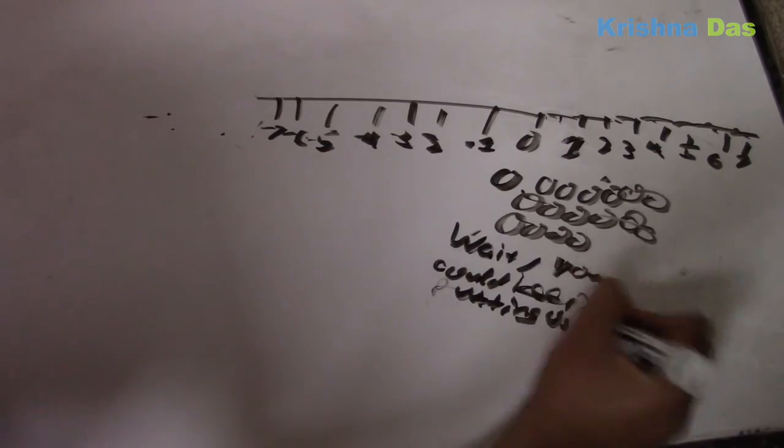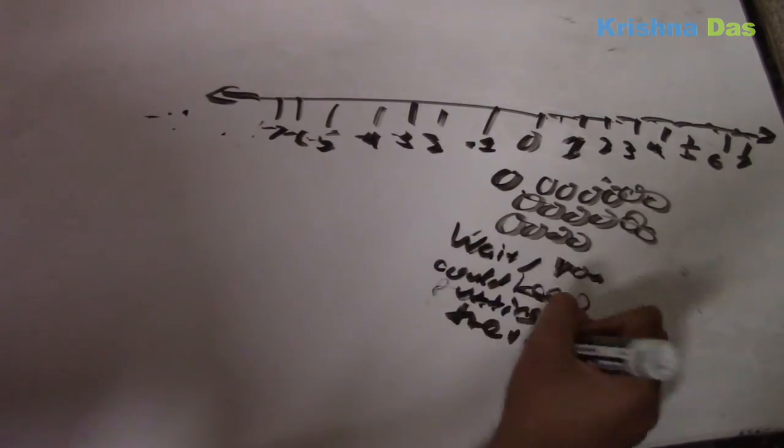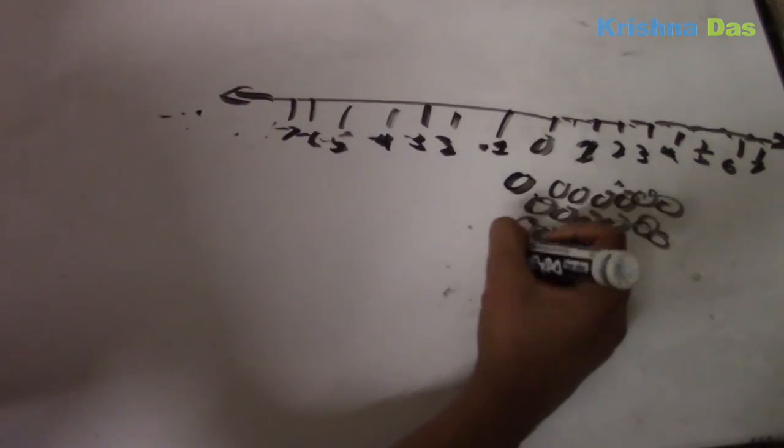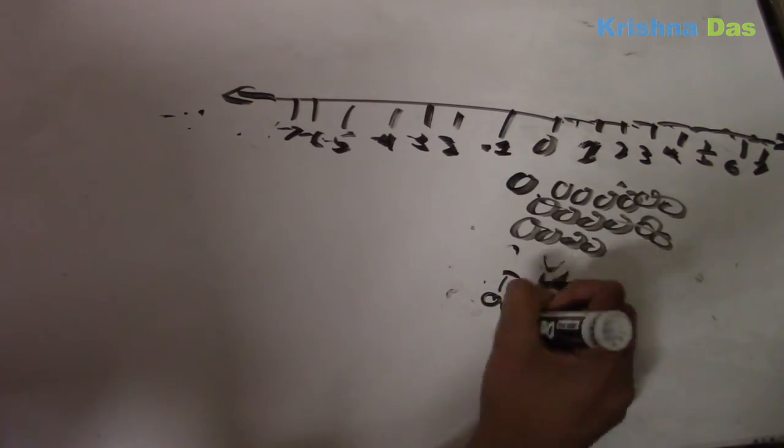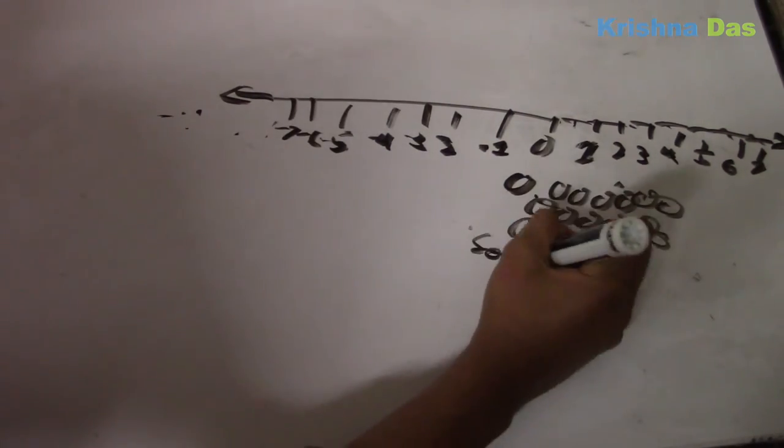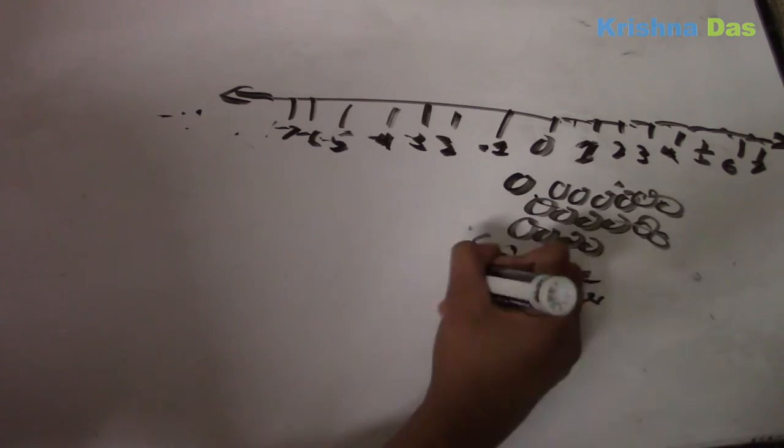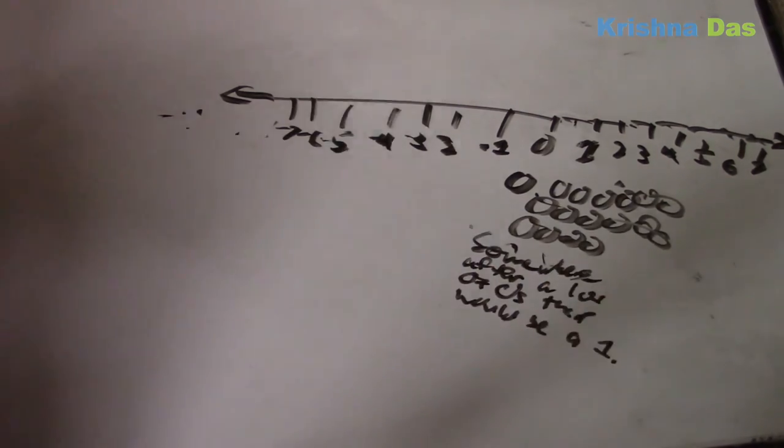If you would fill the whole Earth with zeros, still, you can't get to one. You can fill the whole universe with zeros, and still, you would not get to one, because it would go on for an infinite amount of time. That's something truly amazing, actually, according to me.